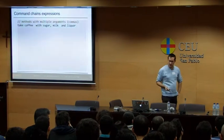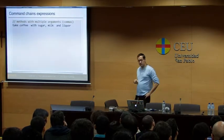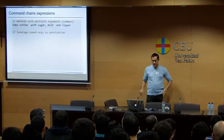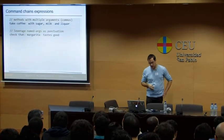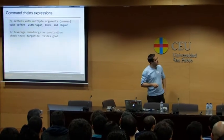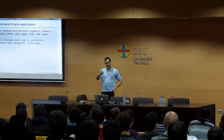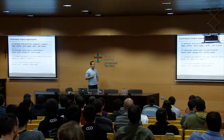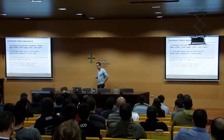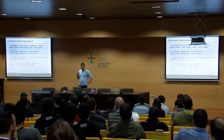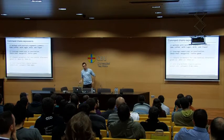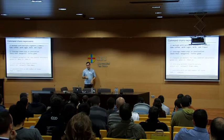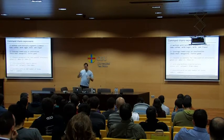In these examples I used a single argument, but you can have several: "take coffee with sugar milk and liquor". You can also use named arguments and non-named arguments — "check that margarita tastes: good". You can also use closures as parameters. There's just one case where you need parentheses: when a method in the chain takes zero arguments, because otherwise the parser can't determine if it's a method call or not.